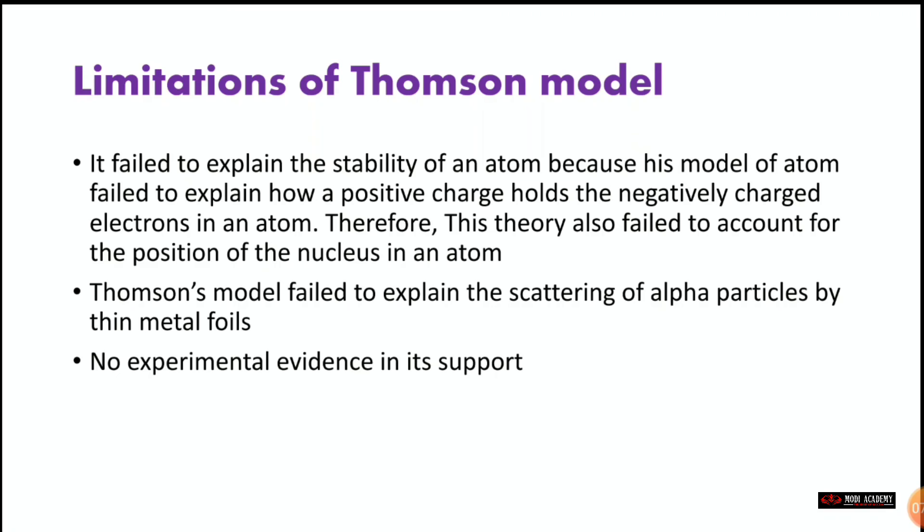Thomson's model also failed to explain the scattering of alpha particles by a thin metal foil. It could not explain why alpha particle rays scatter rather than passing completely through. Additionally, there was no experimental evidence to support this theory, meaning scientists could not verify through experiment whether what the theory claimed was correct.